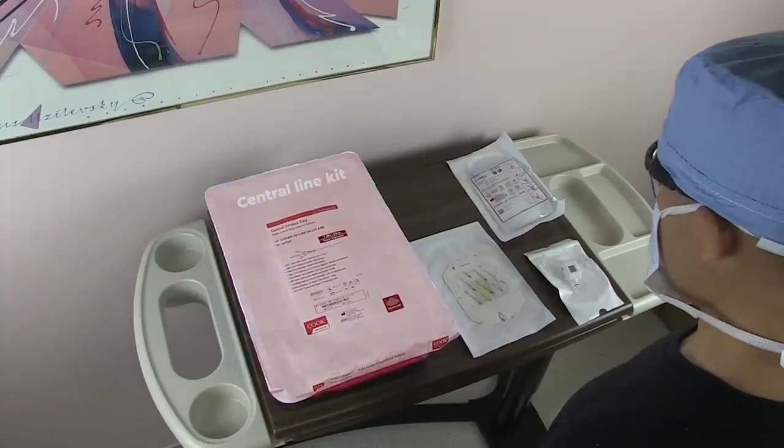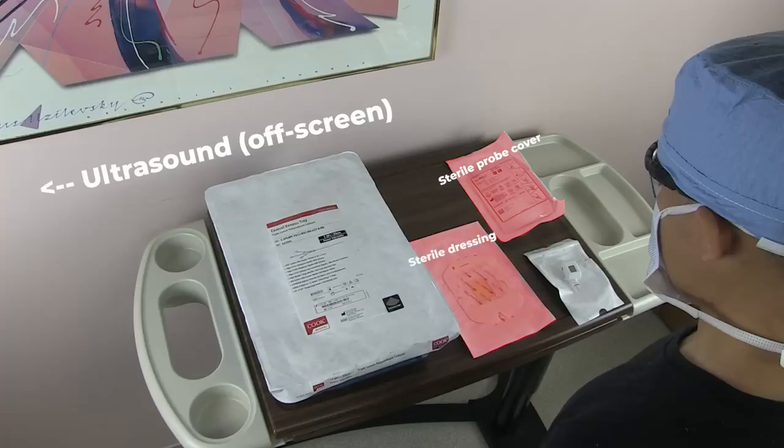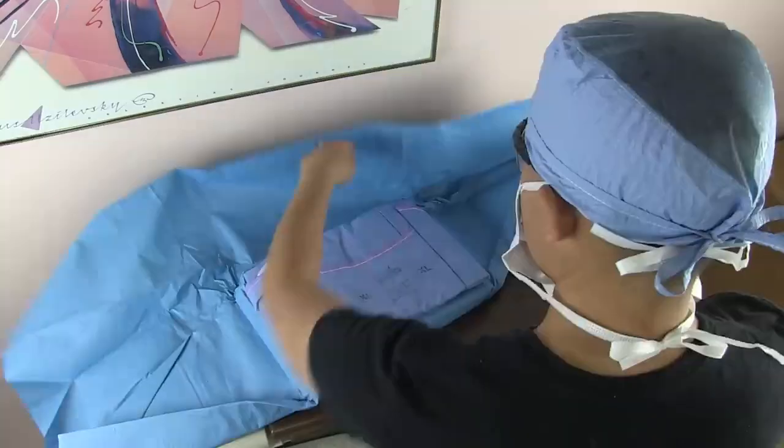Central line kits are awesome and have most of what you need, but there's always something missing, so you have to know what you're getting in the kits. In this case, I also know I'll need an ultrasound, a sterile ultrasound probe cover, and a dressing. I also brought a compass pressure transducer to show you guys. I open up the kit and put on the rest of the included PPE. Alright, let's familiarize ourselves with the rest of the contents of the kit.